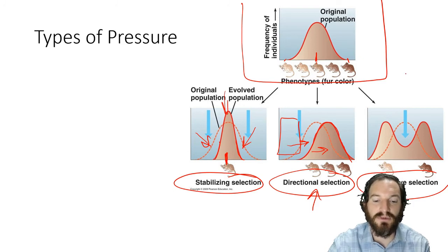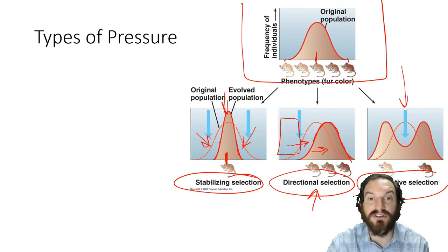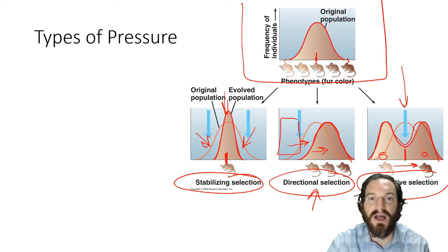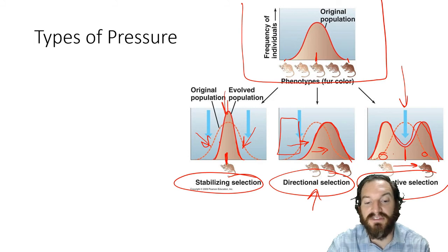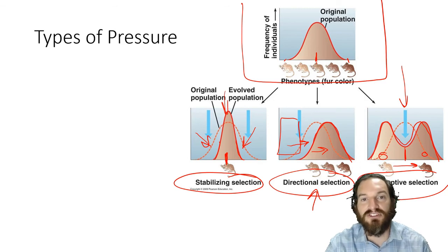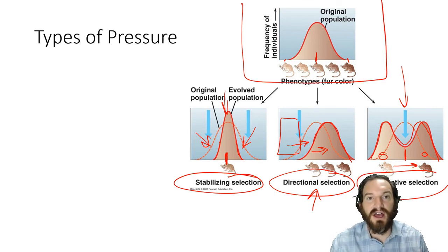In disruptive selection, pressure is applied to the normal or average phenotype, splitting the population into two. What was once a uniform blending of colors is now disrupted right in the middle, resulting in two distinctly different populations. They're not different species yet, but if they continue to breed within their own groups over many many generations, they may eventually become so genetically different that they can no longer breed together — and then they would be considered separate species.